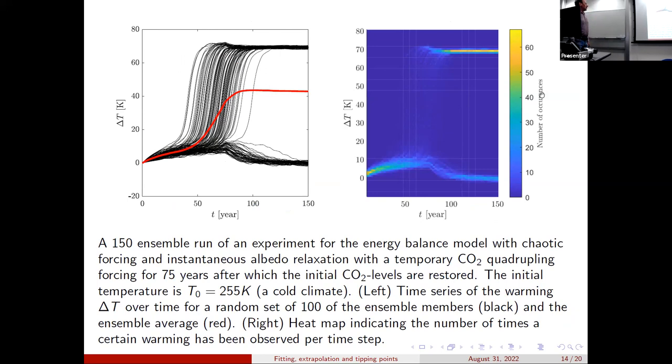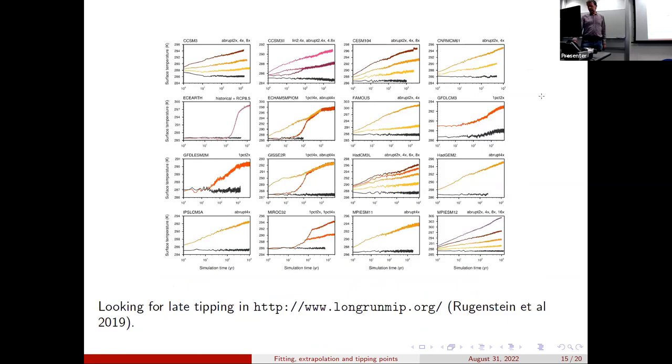So here's another example of what you can do with this model. This is with a large amount of variability and an ensemble. And you can get some nice examples where the ensemble mean will have a very good fit to exponential decay towards some constant. But actually none of the ensemble members go there. That's because some of them have tipped and some of them have not.